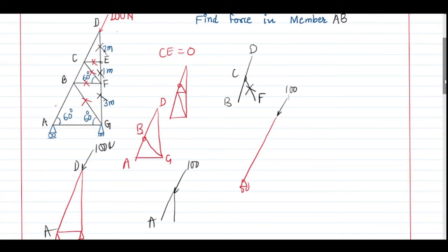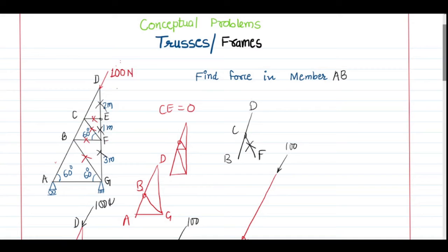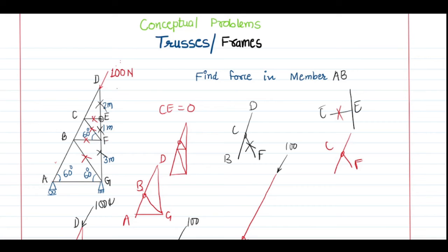So in summary: in the given truss there are multiple zero force members. The concept requires finding two collinear members with a side branch. At joint E, CE was zero force; once removed, CF was zero; then BF and BG were removed. Finally we had a simple triangle, and at joint D the DG part also became zero force. The entire truss reduces to a simple line with a 100 Newton force — so the force in member AB is 100 Newton.